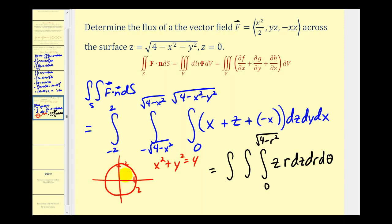R will be from zero to two, and theta will be from zero to two pi.